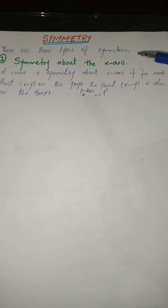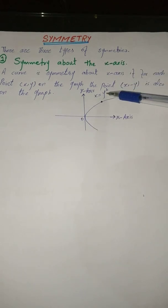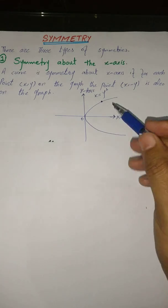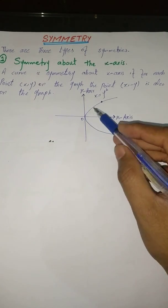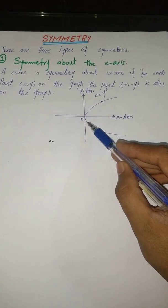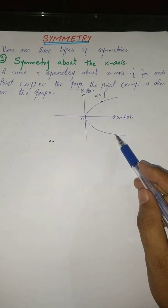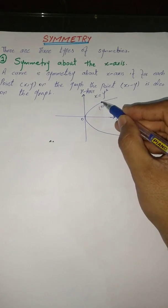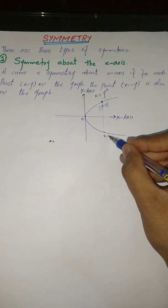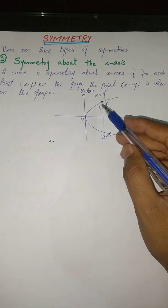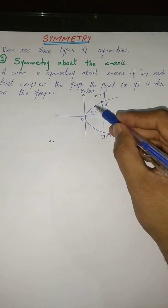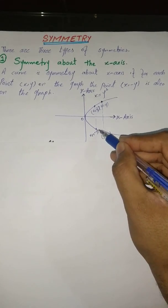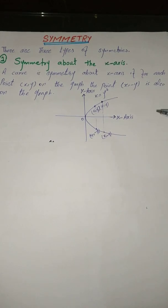For example, the graph of x = y² is symmetric about the x-axis. If we take a point (x, y) on this curve, there also exists the point (x, −y). Similarly, if we take a point (x₁, y₁), then the point (x₁, −y₁) exists below the x-axis. All curves with this characteristic are symmetric about the x-axis.